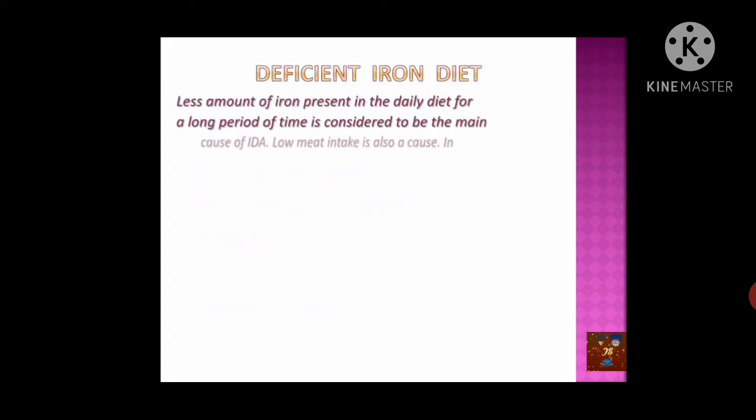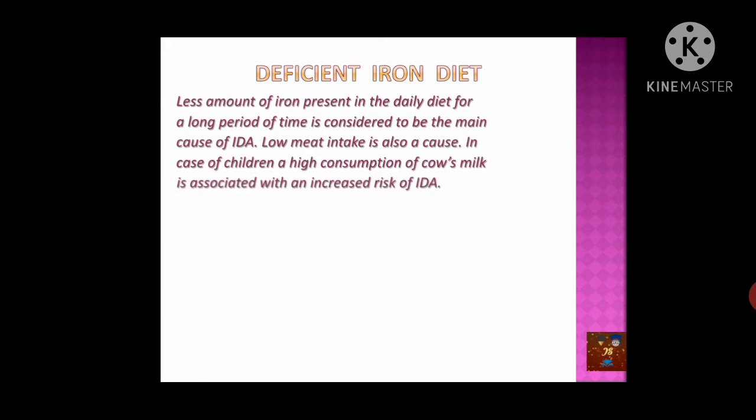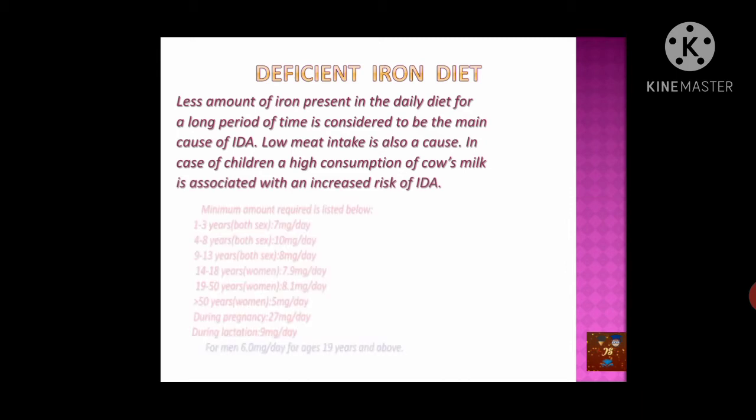First of all, a deficient iron diet: if a person takes an iron-deficient diet for a long period of time, they may be prone to iron deficiency anemia, as some amount of iron is very much necessary in our daily diet. Low meat intake is also a cause, because meat is very rich in iron, but due to socio-economic level and nutritional status in developing countries, people do not take meat regularly. In children, there is a tendency of high consumption of cow's milk, which does not contain enough iron, so children may suffer from iron deficiency anemia.